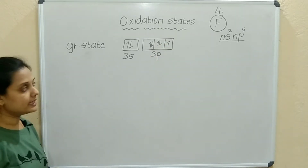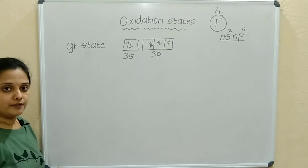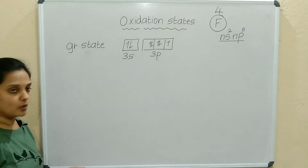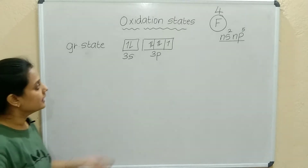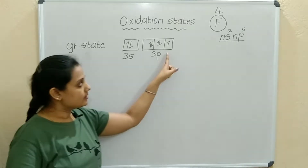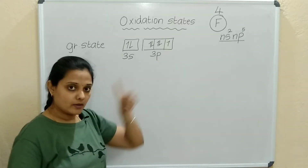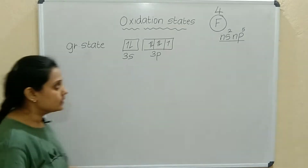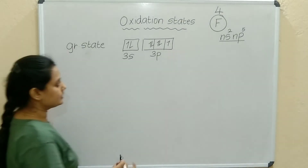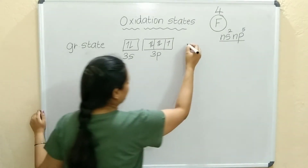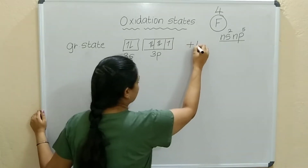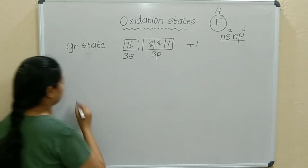In the ground state electronic configuration for Chlorine, there is 1 unpaired electron. So Chlorine can show a plus 1 oxidation state.